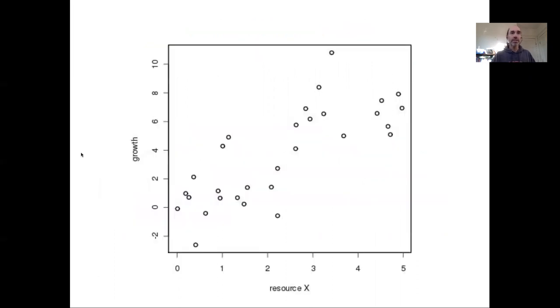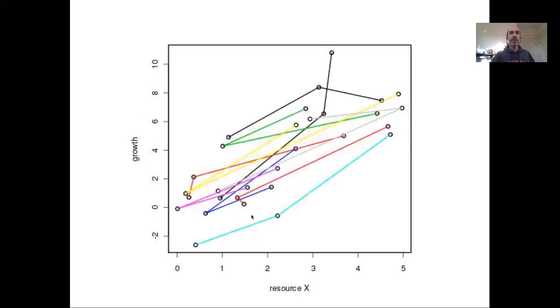Imagine I was interested in looking at the relationship between growth and some resource, and I have access to that overall relationship that emerges across the full data set. But imagine that this data set comes from repeated measures. So these points represent individuals that are tracked through time. If I look at the trajectories of the individuals in the population, suddenly that additional information of which individual is which clearly jumps out as having a pretty large impact on this relationship between growth and resource.